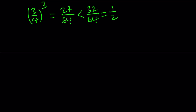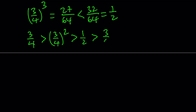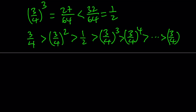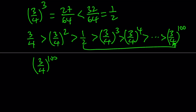We can write this as a bunch of inequalities. Since 3 fourths is between 0 and 1, it is greater than its second power, but we noted that is greater than 1 half, and when we raise 3 fourths to the third power it is going to be less than 1 half. So 1 half is squeezed between two powers of 3 fourths. This continues with higher powers. For our purposes, we stop at the 100th power: 3 fourths to the power of 100 is less than 1 half. You could easily guess that because 3 fourths raised to a really large power gives a very small number, obviously less than 1 half.